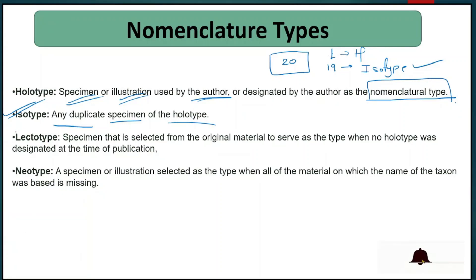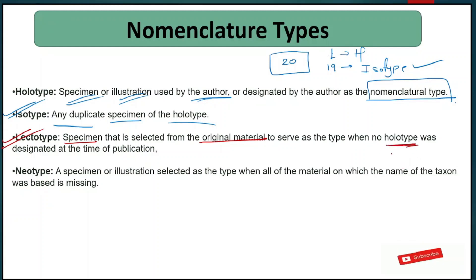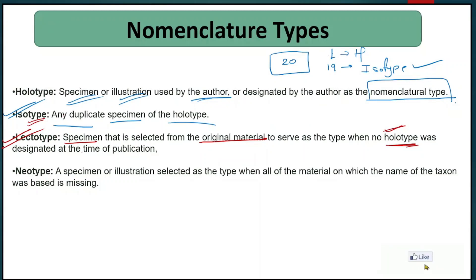Lectotype is a specimen selected from the original material to serve as the holotype when no holotype was designated at the time of publication. If there is no holotype present, an isotype specimen is represented as a holotype, and that specimen is known as a lectotype. One reason this occurs is that the holotype was not designated at the time of publication.